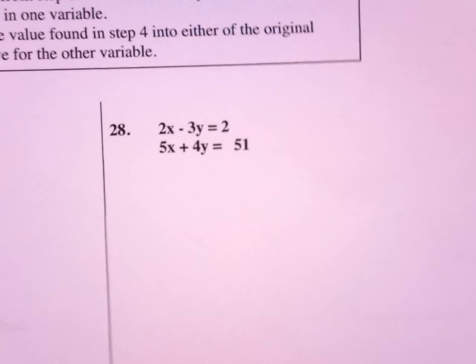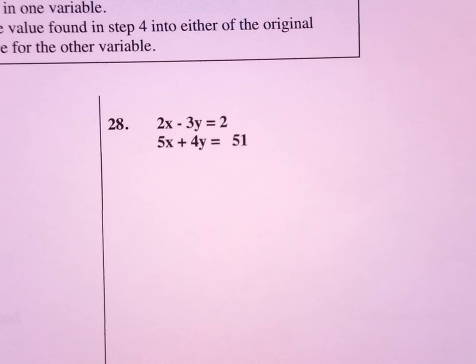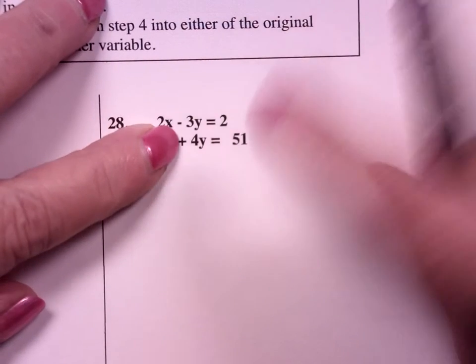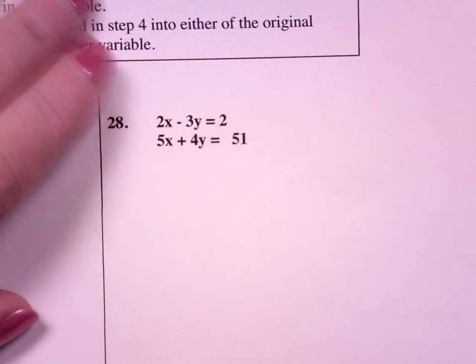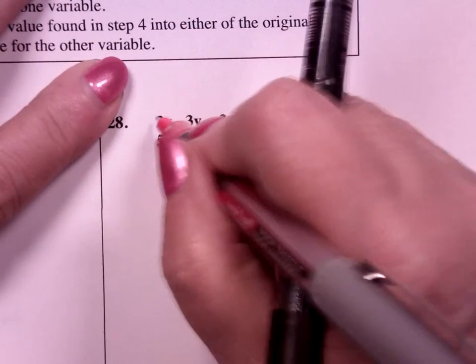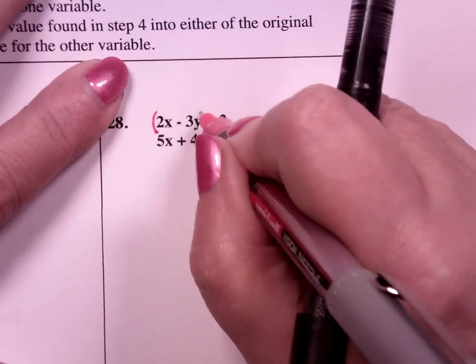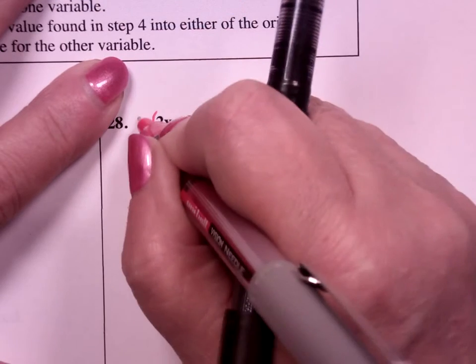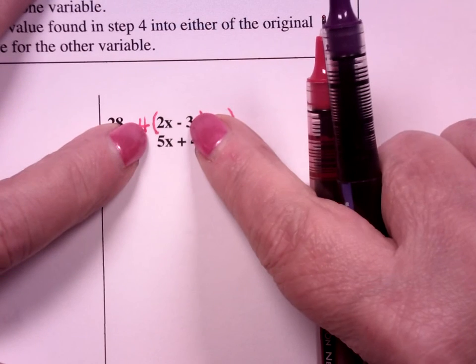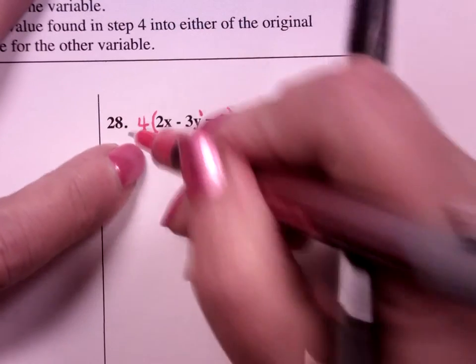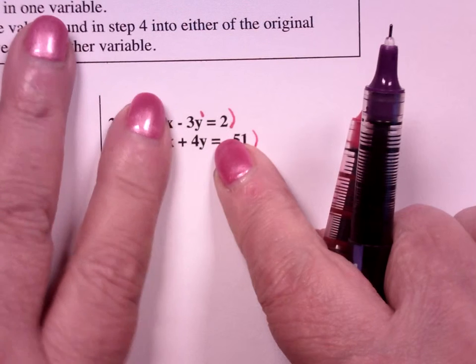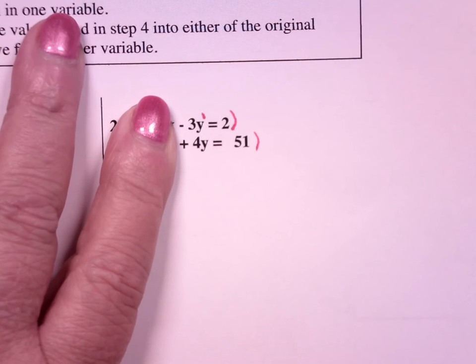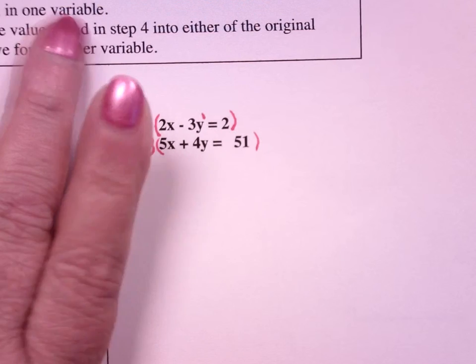This one's a little difficult of the two. The first thing that I look at is do I have something that's already of opposite sign? Yeah, the y's. But I need to make the y coefficients be the same. Now I can do that by multiplying the first equation by 4, because 4 times 3 is 12, and the second equation by 3, because 3 times 4 is 12. That becomes a positive 12 and a negative 12. What happens to y? It cancels out.